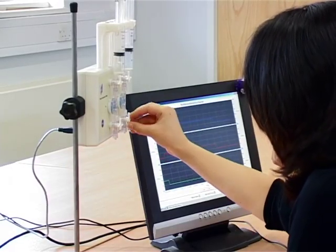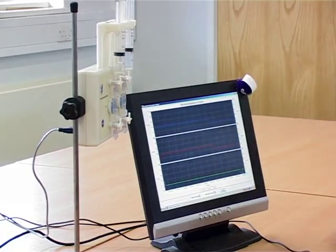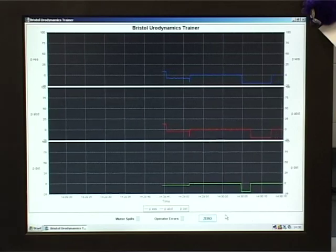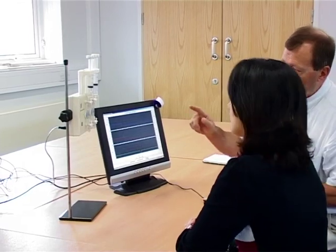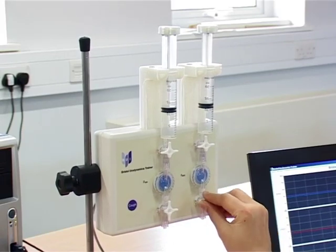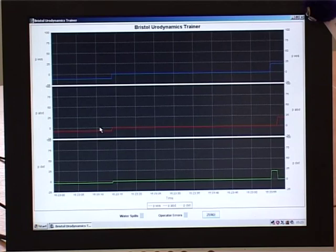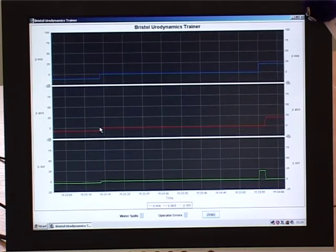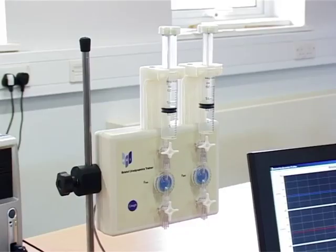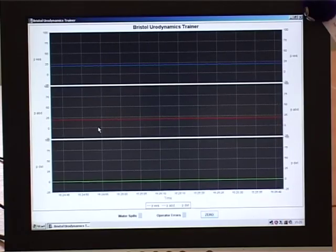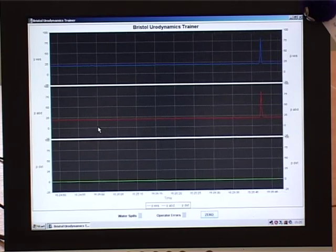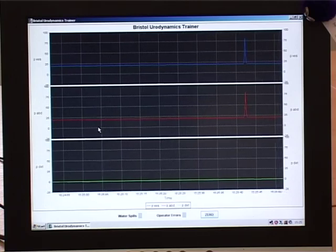The trainee can then be led through the correct zeroing procedure. Once this has been done, a simulation of urodynamic recording can be carried out by opening the taps to the patient. The pressure rises to a normal patient level and a live signal appears on both lines. A cough can now be simulated when the trainee presses the button on the front of the unit. The peaks rise equally, indicating good pressure transmission on both lines.